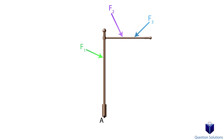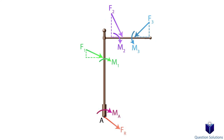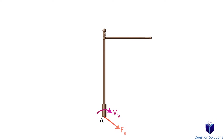For forces, all we need to do is break each of them into x and y components and then add it up. For moments, it's pretty much the same — we figure out the moment created by each force about point A and then add it up. Then we can show a single resultant force and a single couple moment that accounts for all the other forces.